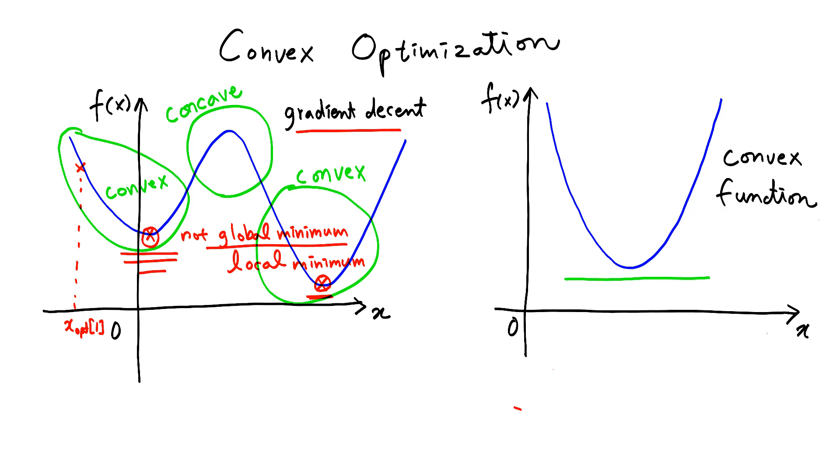And when we have a convex function, if we find a local minimum using gradient descent method then we can say this is also the global minimum. This is called convex optimization.